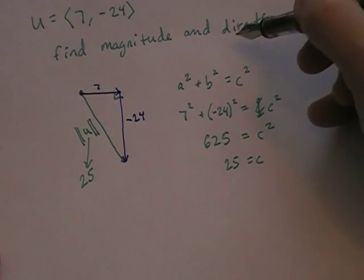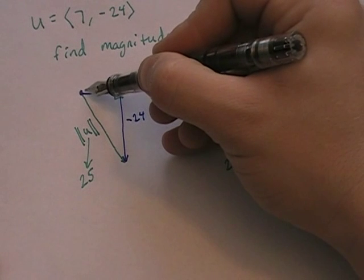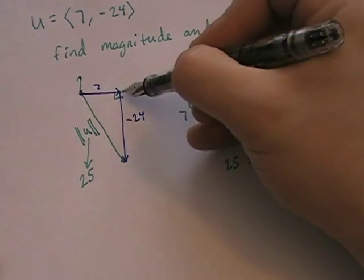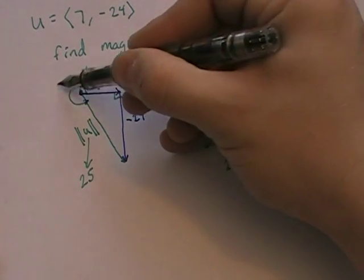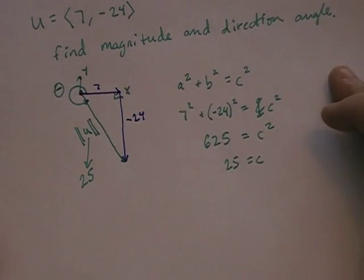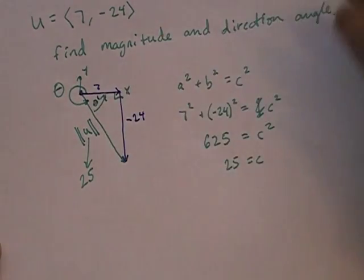So component form is the legs. It's a and b in Pythagorean's theorem. And then the magnitude, this guy, u double bar, the magnitude of u, is just the hypotenuse. Now, the direction angle, that's the other thing we were asked for, is typically going to be, if you think of an x, y coordinate plane, so this is x and this is y, is going to be theta. It's going to be theta. And of course, this angle here inside the right triangle would be theta prime.